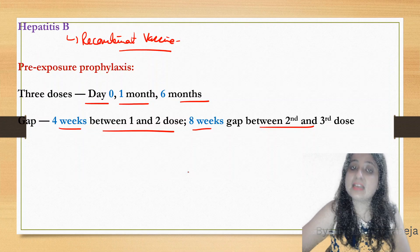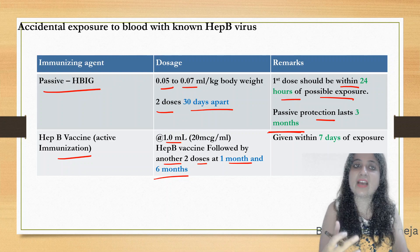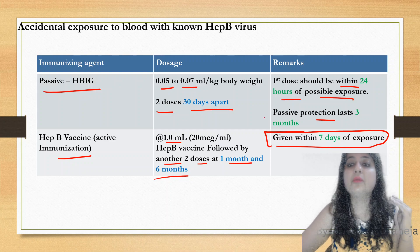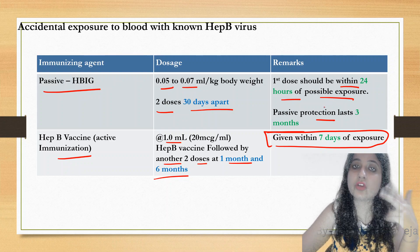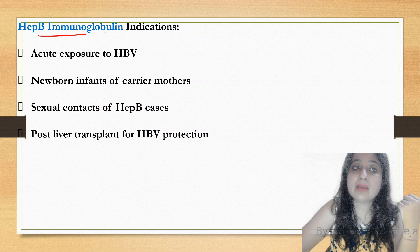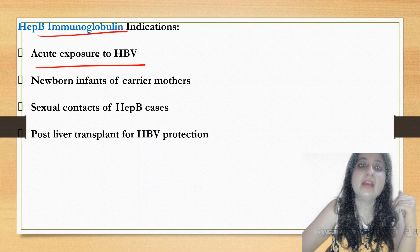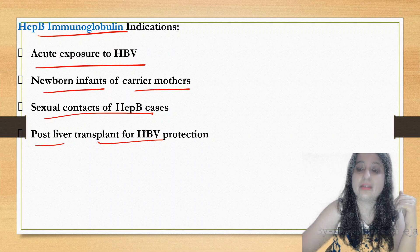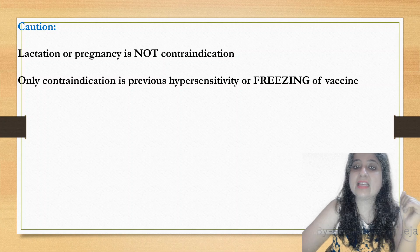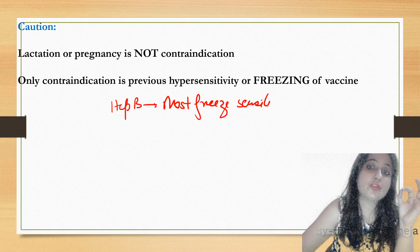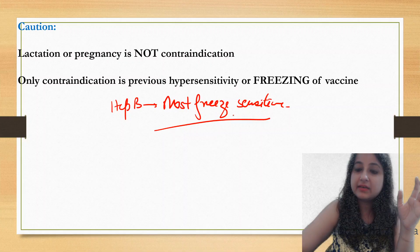Active hepatitis B vaccine (1 ml) should also be given — day 0, then at one month and six months. For accidental exposure, start within seven days maximum. Both passive and active immunization are given together in accidental exposure. Hepatitis B immunoglobulin indications: acute exposure to HBV, newborns of carrier mothers, sexual contacts of HBV cases, post-liver transplant. Pregnancy and lactation are not contraindications. Hepatitis B vaccine is the most freeze-sensitive vaccine — freezing must be avoided.